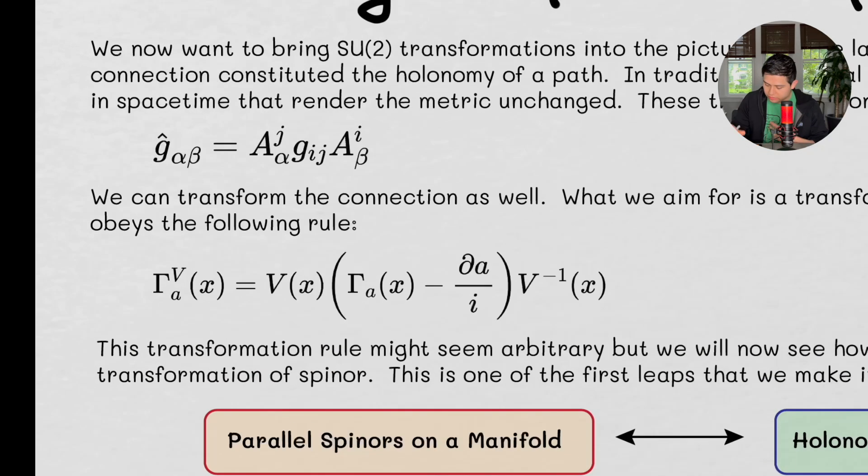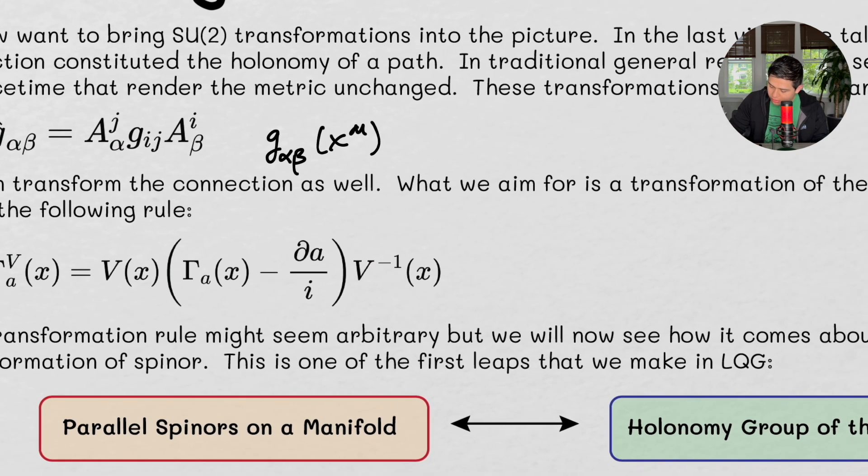Without going back too far into GR, G alpha beta, I will decrease the thickness of my pen here. G alpha beta is a function of our space-time. It's also got a basis, a tensor product basis.